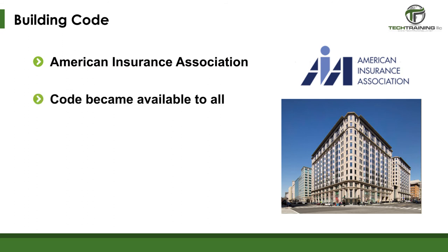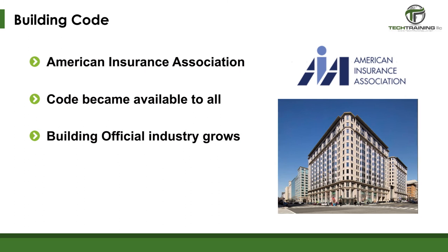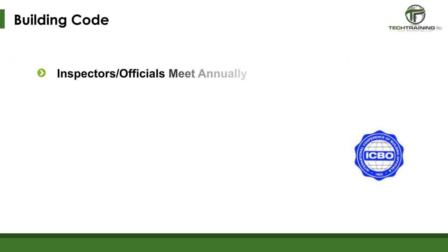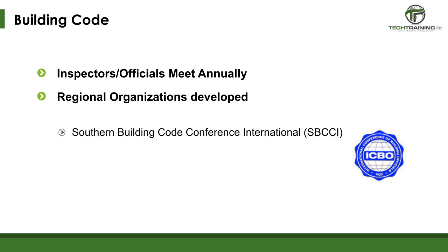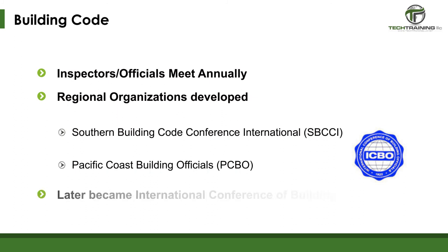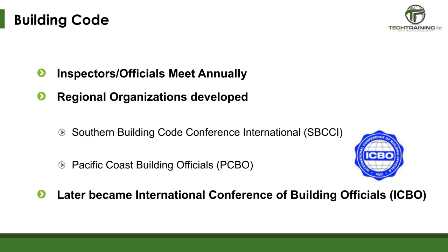Insurance companies, who lost much money in the Great Fires, pushed an organization called the National Board of Fire Examiners to create the first National Building Codes of 1905. The insurance companies made this code available to jurisdictions around the country who wanted to easily implement a sound code. This code was then amended at annual meetings and updated regularly. As building codes developed and increased around the nation, so did the building officials industry. These meetings resulted in several regional organizations of building officials: the Southern Building Code Conference International, or SBCCI, formed in the southeast; the Building Officials and Code Administrators, or BOCA, dominant in the Midwest; and the International Conference of Building Officials, or ICBO, dominant in the west.